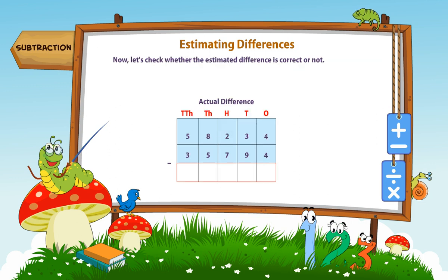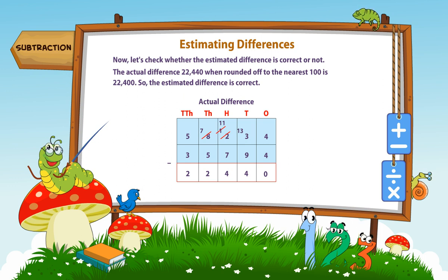Now let's check whether the estimated difference is correct or not. The actual difference is 22,440. When 22,440 is rounded off to the nearest hundred, it is 22,400. So the estimated value is correct.